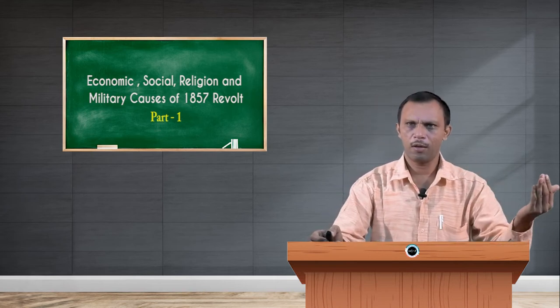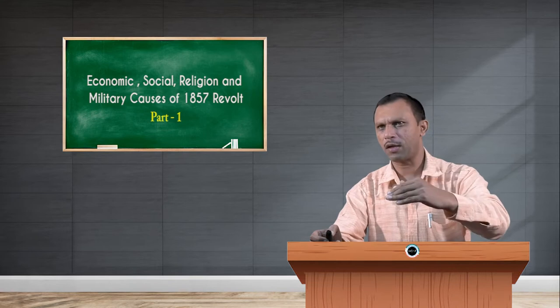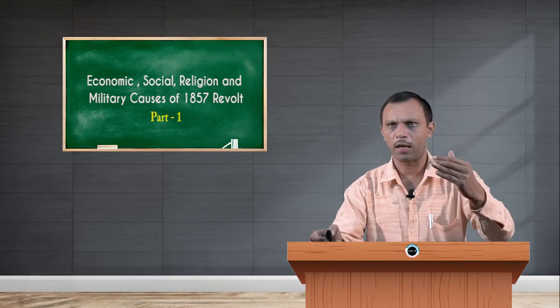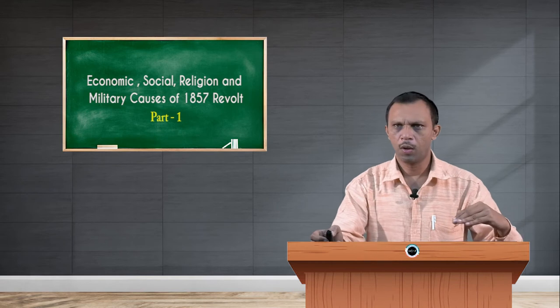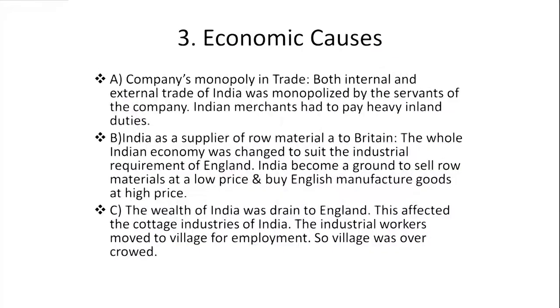We move further one by one, what are the economic criteria that led to the 1857 revolt. First one, the company's monopoly in trade—both internal and external trade was monopolized by British servants. Indian merchants had to pay both inland and foreign duties, inland or export and import duties. India became the supplier of raw materials to Britain. The whole Indian economy was changed to suit the industrial requirements of England.